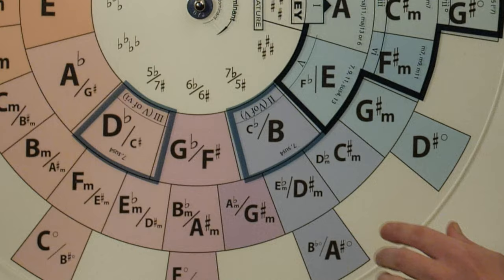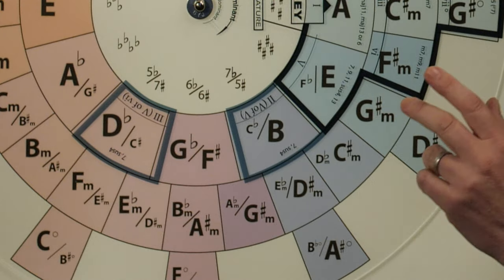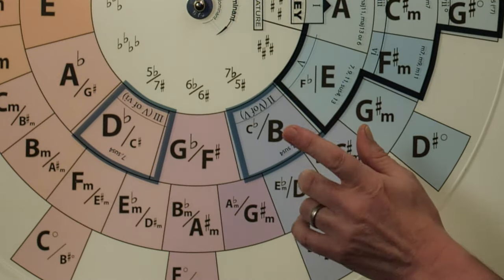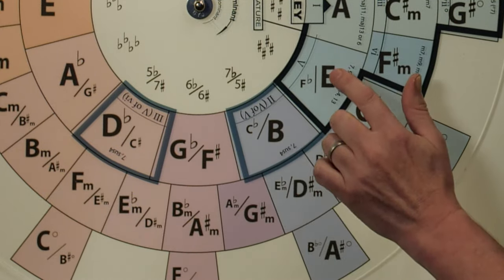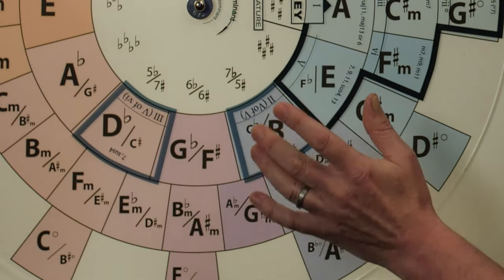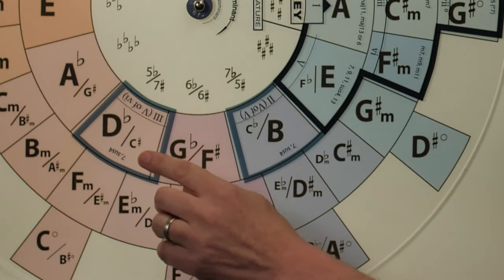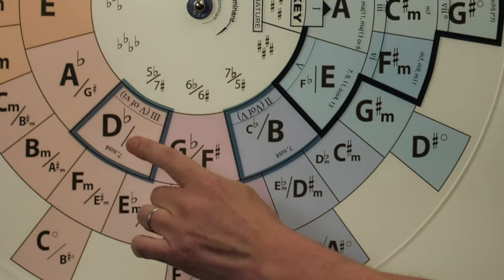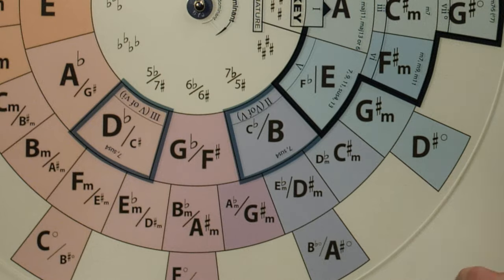Secondary dominance. You notice these two lightly colored outlines in the chord wheel. These are the two secondary dominants you're going to see by far the most often. The first one, five of five, is the secondary dominant of the five chord. Five of five, sometimes you'll see it referred to as a second major. Five of six, the other one you'll see most commonly, C sharp. So a B seven, C sharp seven. These are the two primary secondary dominants.